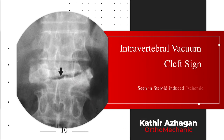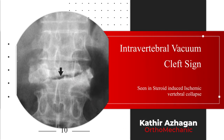Intravertebral vacuum cleft sign usually follows steroid-induced ischemic vertebral collapse. This appearance is due to a gaseous cleft within a transverse separation of the vertebral body in a patient with vertebral collapse. It is best seen in extension and may disappear in flexion.